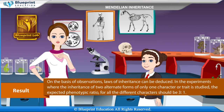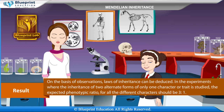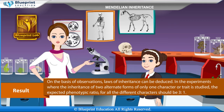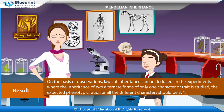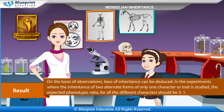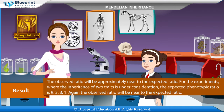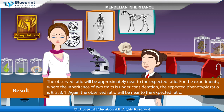Result: On the basis of observations, laws of inheritance can be deduced. In experiments where the inheritance of two alternate forms of only one character or trait is studied, the expected phenotypic ratio for all the different characters should be 3:1. The observed ratio will be approximately near to the expected ratio.